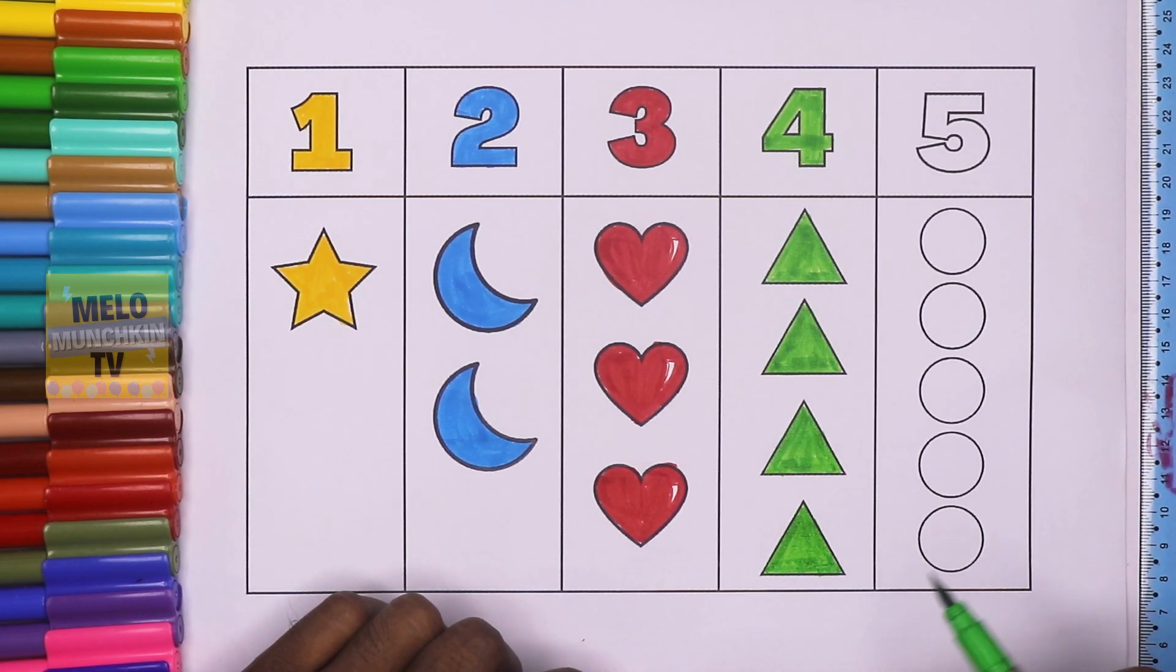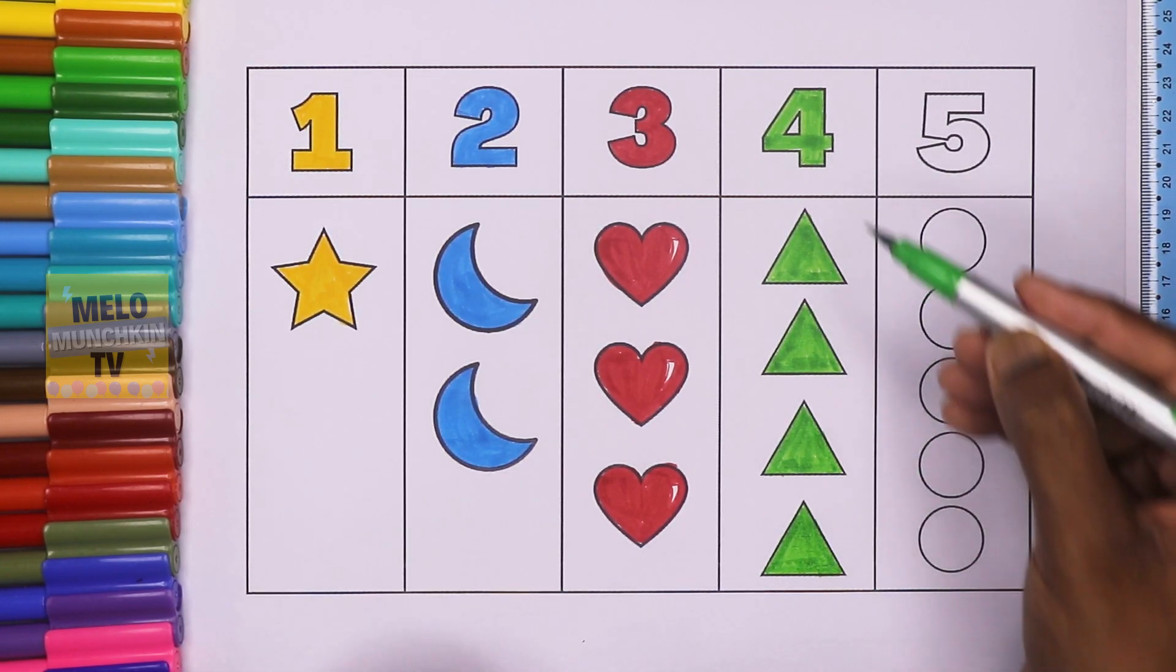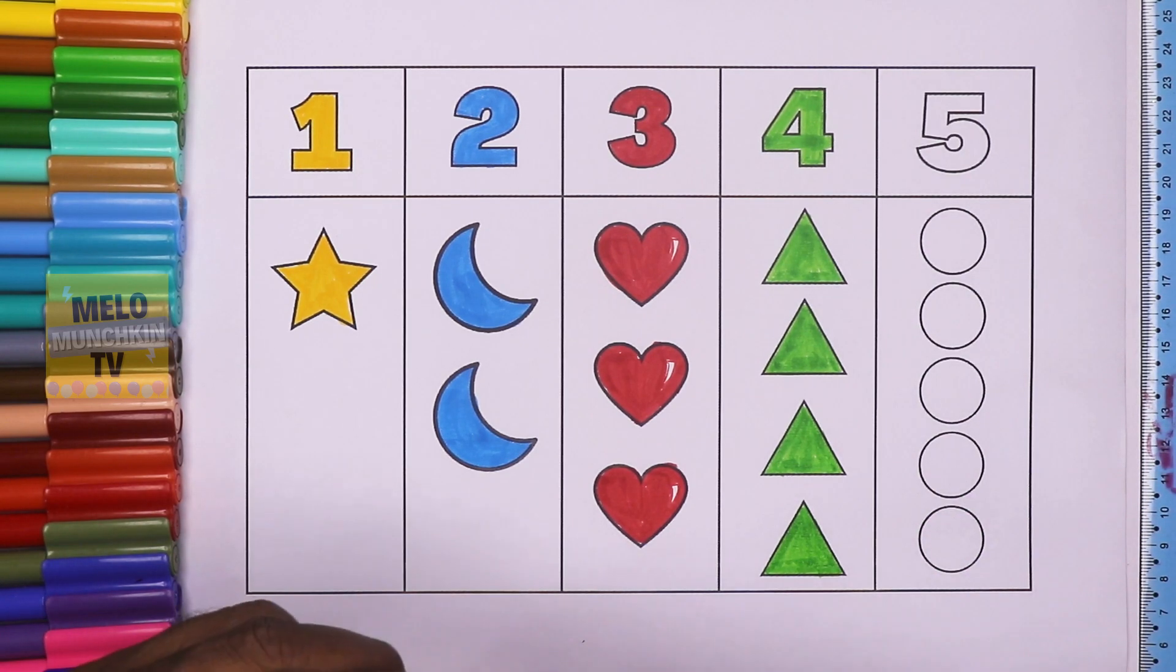4 triangles. 1, 2, 3, 4. 4 triangles. Green color.